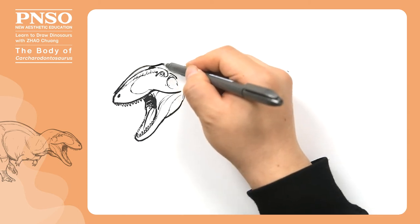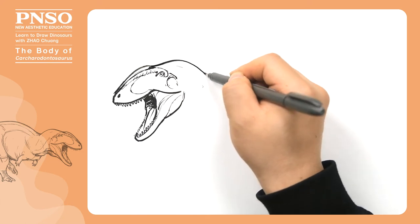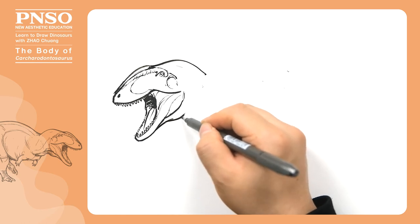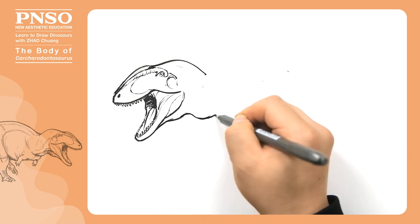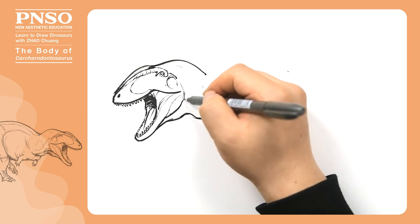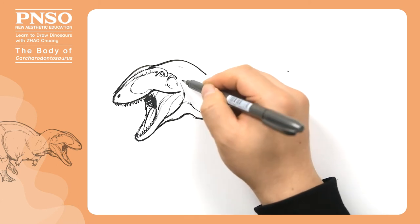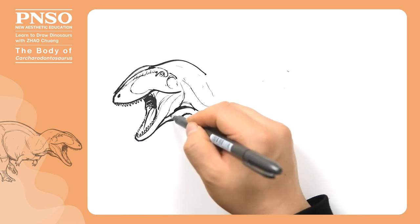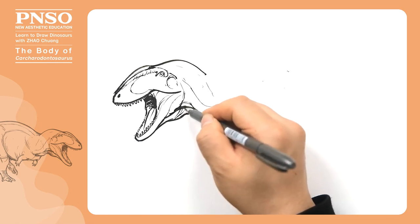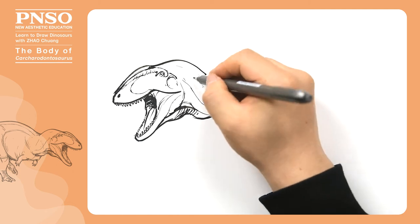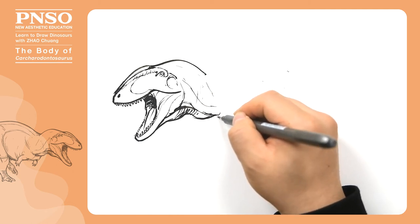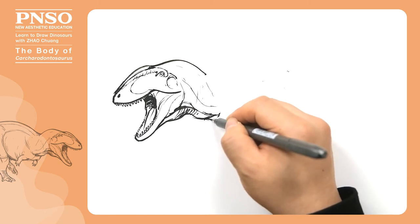Followed by its throat downward. On both sides of its neck, there were thick and big muscles. The muscles below were connected to its shoulder blades and coracoids.